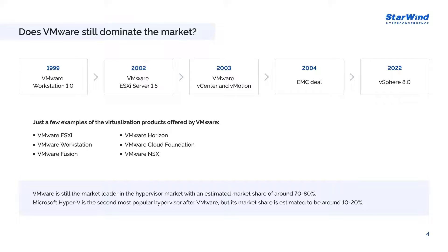VMware is still the market leader in virtualization with an estimated market share of around 70–80%. Microsoft Hyper-V is the second most popular virtualization platform after VMware, but its market share is estimated to be around 10–20%. vSphere 8 is the latest version of VMware vSphere software for managing virtualized environments. It provides an integrated management platform for the VMware ESXi hypervisor, while ESXi provides a stable platform for hosting virtual machines. vSphere provides the management software and tools to configure, monitor, and manage virtual machines and associated resources such as storage and network connectivity. Together, vSphere and ESXi provide a comprehensive virtualization solution.